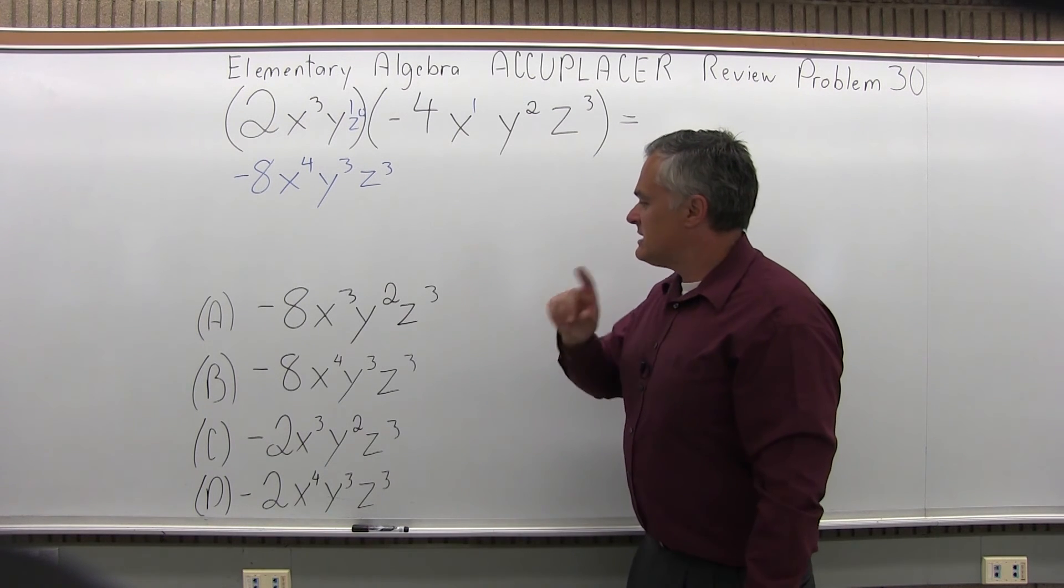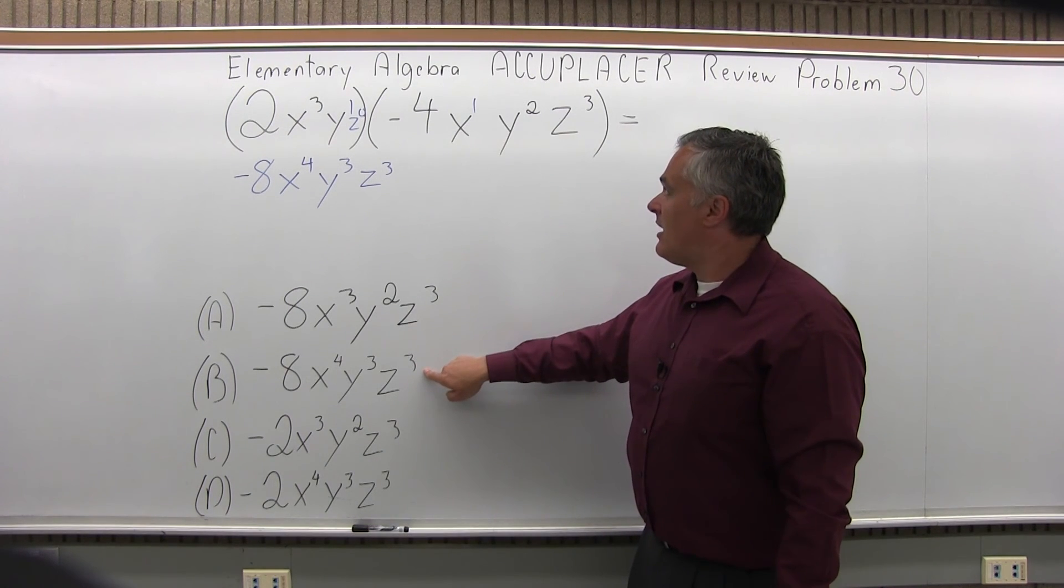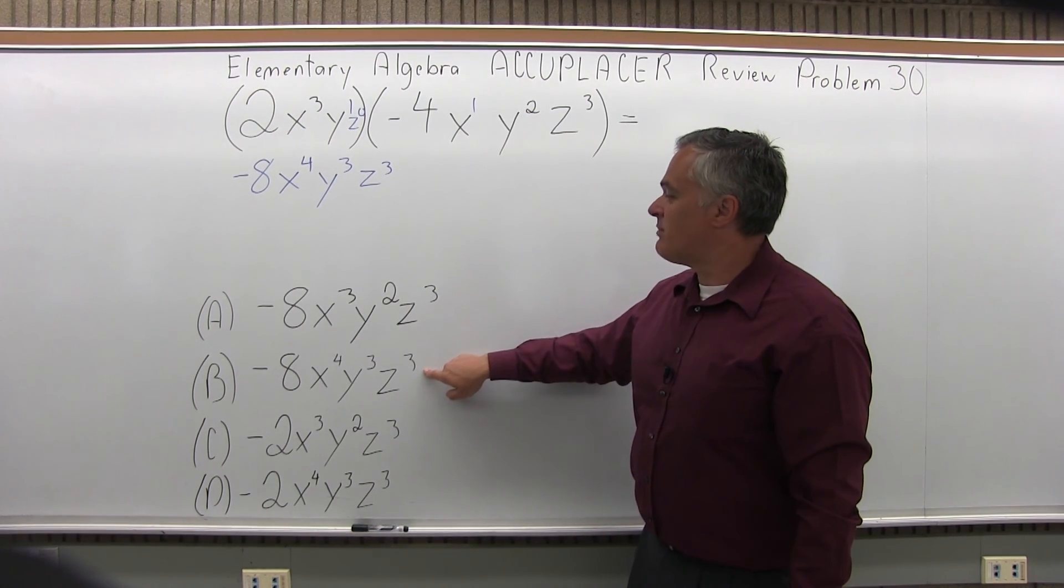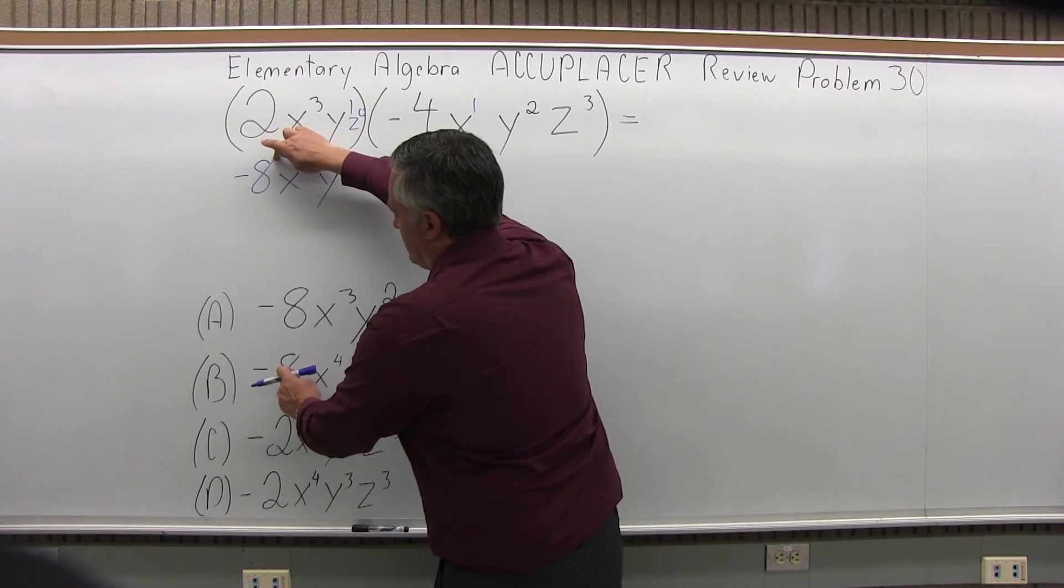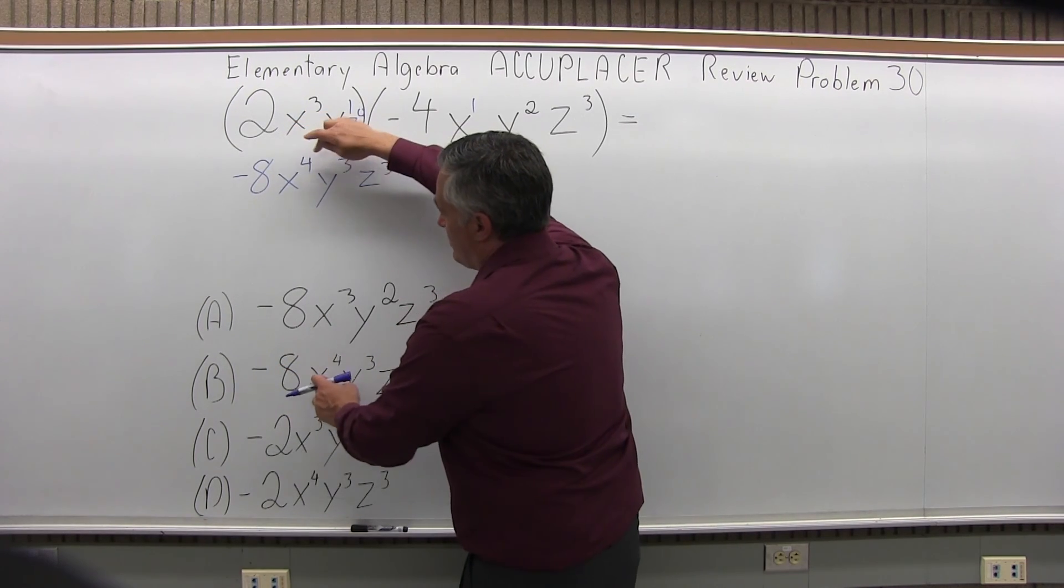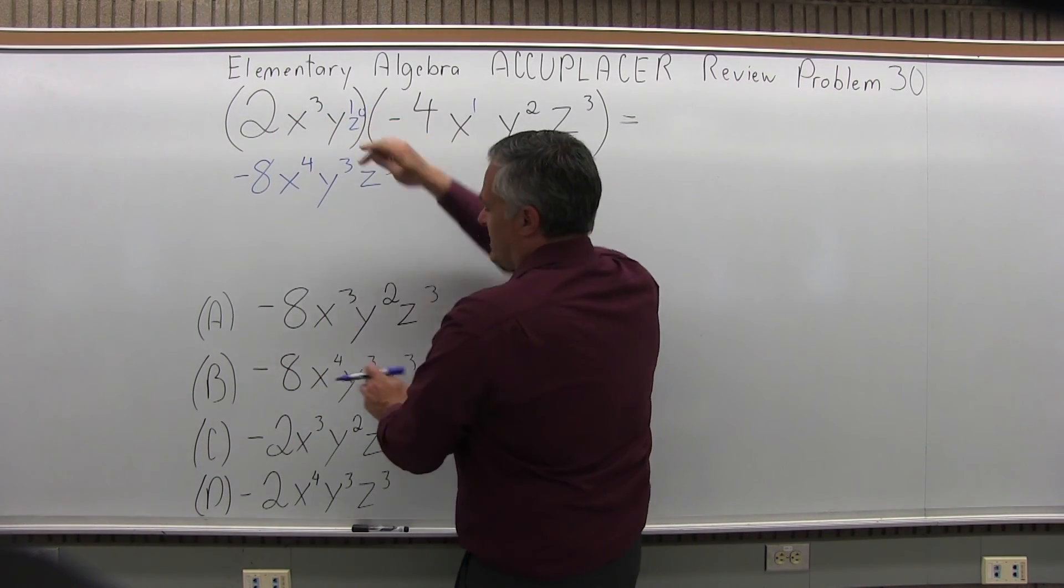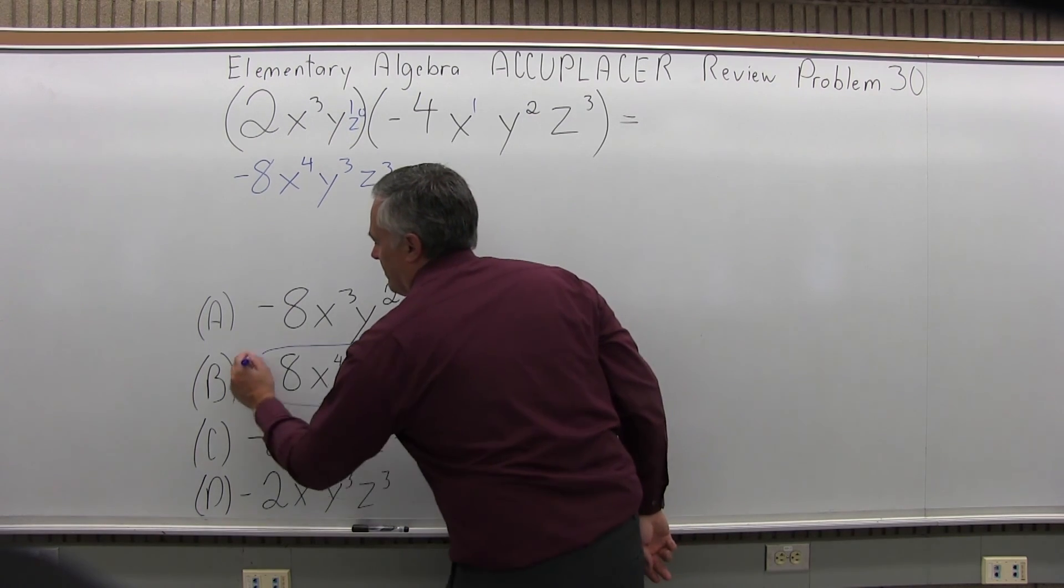Check my list of answers, and option B is a perfect match. You want to check the number, each variable, and the exponents. The negative 8 matches, x⁴ matches, y³ matches, z³ matches. So it's a perfect match with option B.